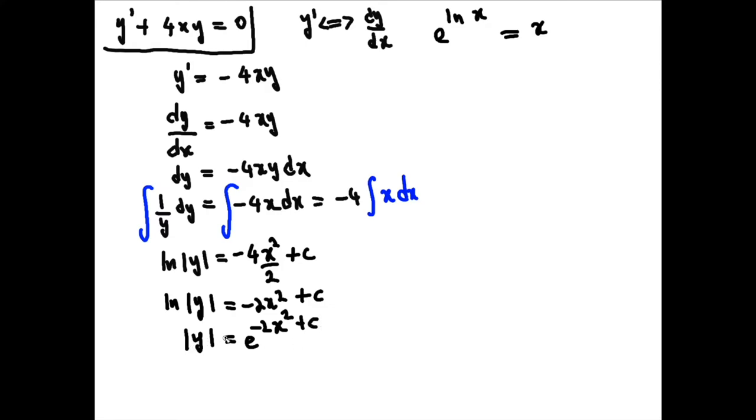Now to get the y, what we can recognize is we can rewrite this further as the absolute value of y is e to the minus 2x squared times e to the c. It's a law of exponents that if you have some value a to the power of b, and multiply it by another value a to the power of c, this is the same as a to the power of b plus c. That's what we're using here to separate these two out. And what we can recognize is that e to the power of some constant is still just some constant.